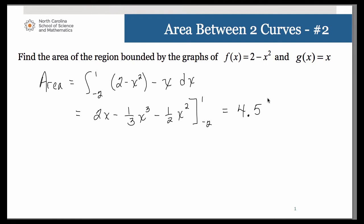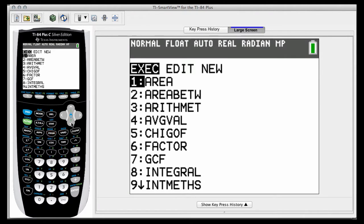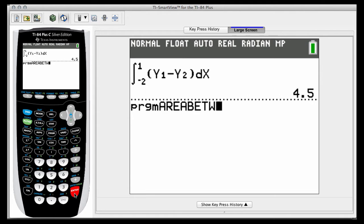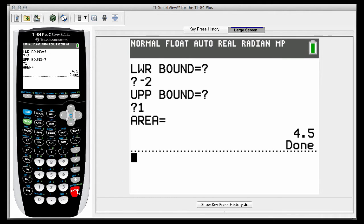So once again, we could check that by using that area-between program. So let's give that a try. So our lower boundary in this case is negative 2, upper boundary is 1. And voila, there's the answer. Again, a really great way to check your answers. Thank you.